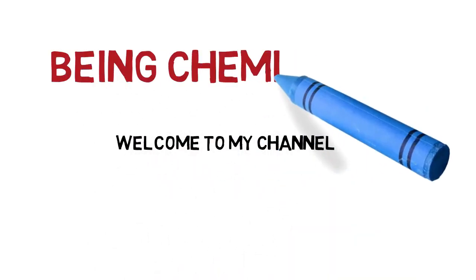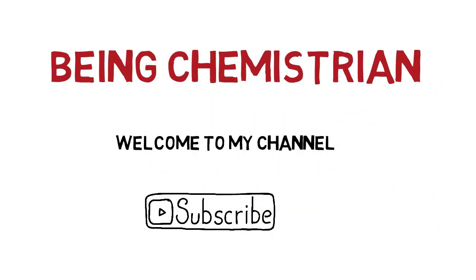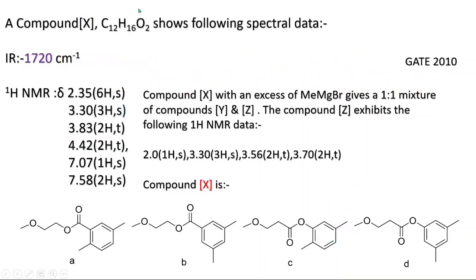Hello friends, welcome to my channel Being Chemistry. Please subscribe and hit the bell icon. Now we will do another problem which is a GATE 2010 question. A compound X with molecular formula C12H16O2 shows the following spectral data. They have mentioned IR data at 1720 cm⁻¹, and six ¹H NMR chemical shift values. We have to find compound X based on this NMR and IR data.